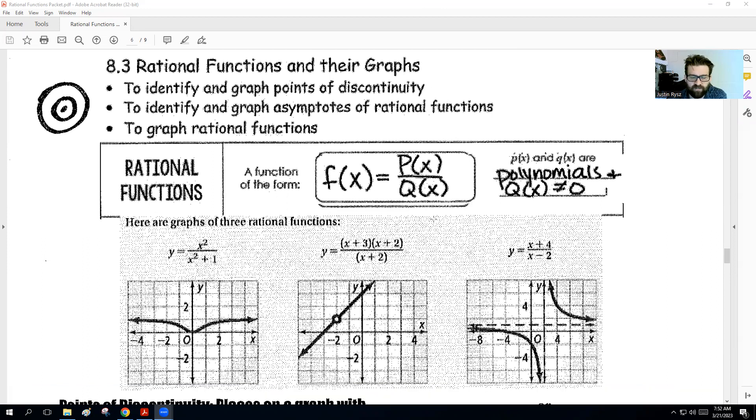First off, rational functions, things that we've been dealing with, is basically a function that has two parts or two separate functions dividing each other. So P and Q are both polynomials, which is what we did in the last chapter. The only thing is Q just cannot be zero, because we can't divide by zero. So as long as we have something divided by something, that's considered a rational function.